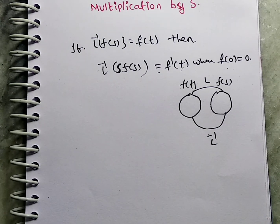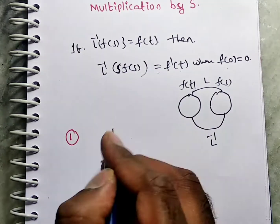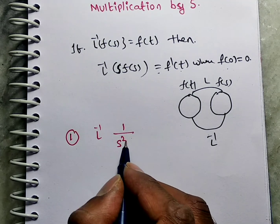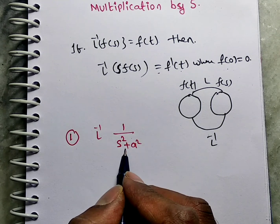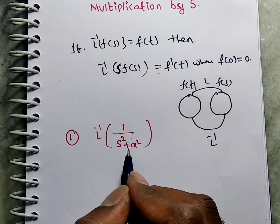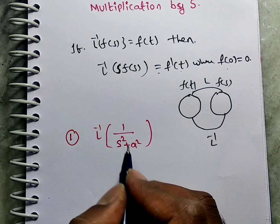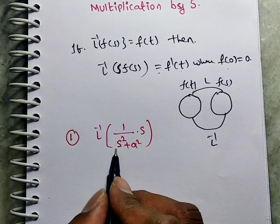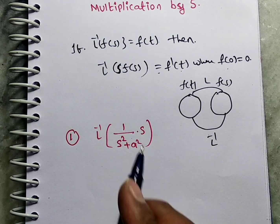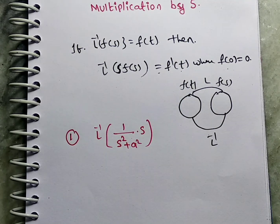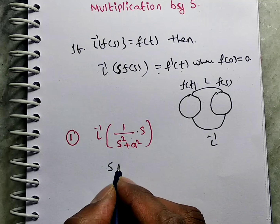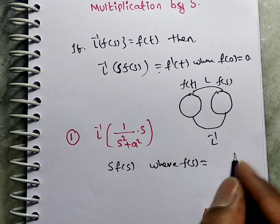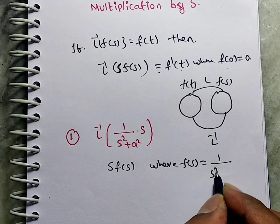Now, problems on this. First problem: solve L inverse of S·F(S). Generally, consider F(S) as 1/(S²+A²). If you consider 1/(S²+A²) as F(S), can you say what is f(T)? Yes — sin(AT)/A. Now multiply S for this. This problem can be solved in different methods, but if they mention specifically to use the multiplication by S method, you have to use this method only. This is in the form of S·F(S), so tell me what is F(S)? F(S) equals 1/(S²+A²).